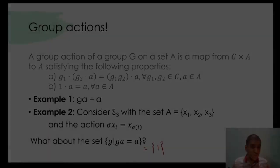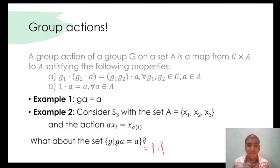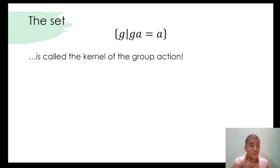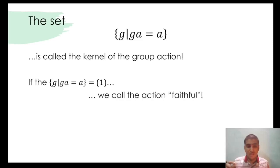In fact, it is. G such that GA is equal to A is called the kernel of the group action. Further, if the kernel of the group action is the one point set which contains identity, we call that group action - any guesses, my faithful friends? - faithful. If kernel is the one point set {1}, or the identity of G, then the group action is called faithful.